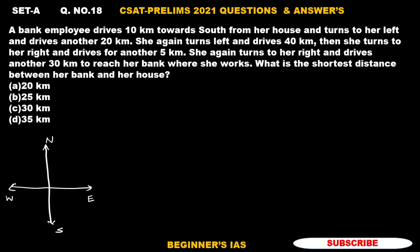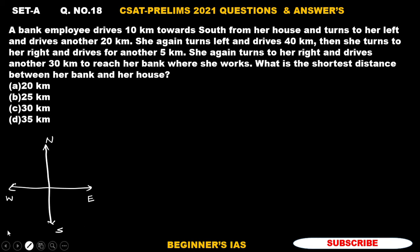Hello everyone, welcome. Let us discuss question number 18. A bank employee drives towards south from her house, then turns left and drives another 20 kilometers. She again turns left and drives 40 kilometers, then turns to her right and drives for another 5 kilometers. She again turns to her right and drives another 30 kilometers to reach her bank. What is the shortest distance between her bank and her house?